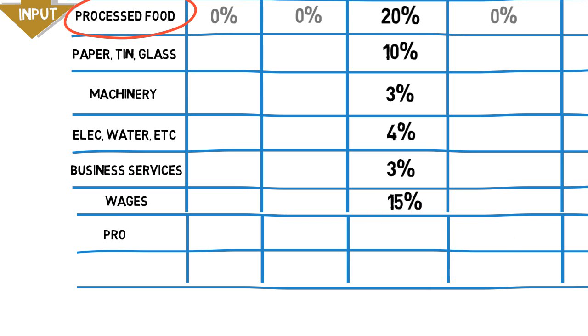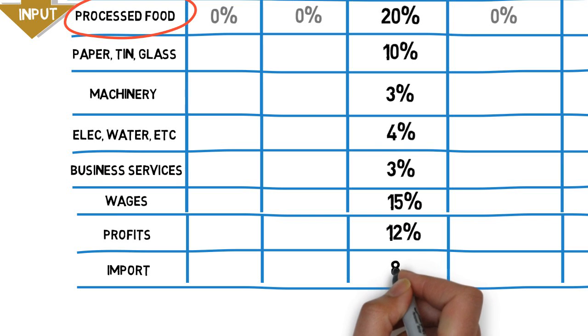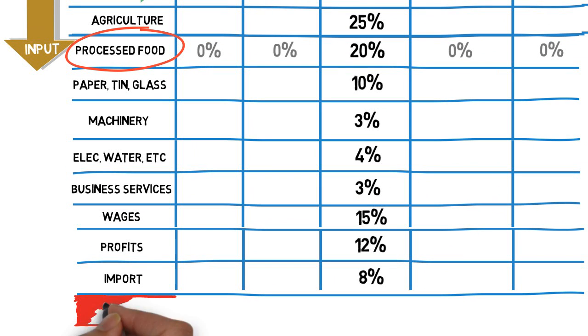This input from people is what economists call value added. And finally on the input side is imports of processed food, which in this case would be 8%. Again adding up to 100% of the value of production.